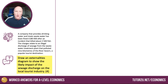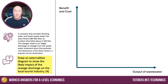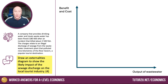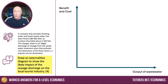So essentially, it's a market failure diagram that we want to draw. Here's the four marks. First of all, benefit and cost on the y-axis — it's all about private and social benefits and costs. On the x-axis, output, or you can make it more contextual: output of waste water. So I'm focusing on the production externalities, negative externalities from the treatment of waste water.